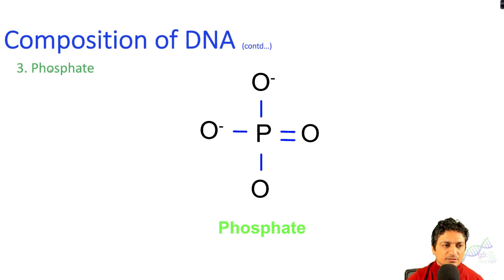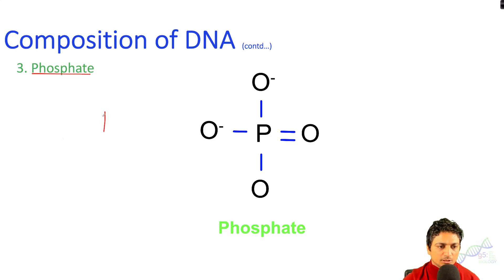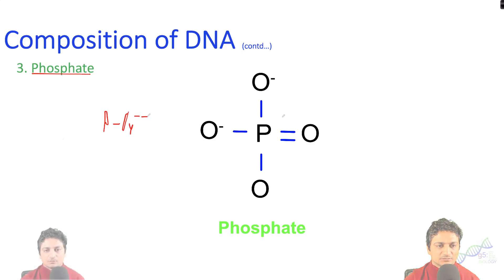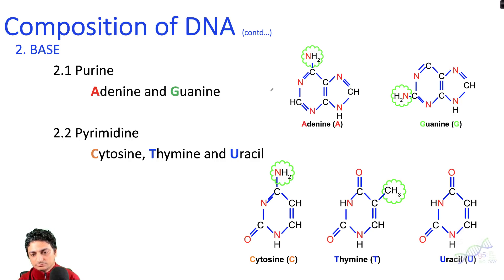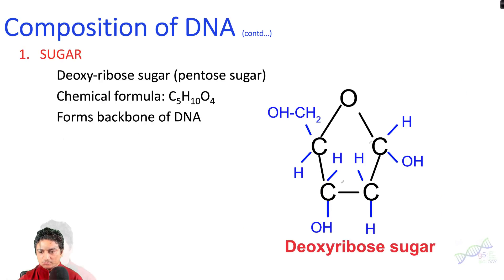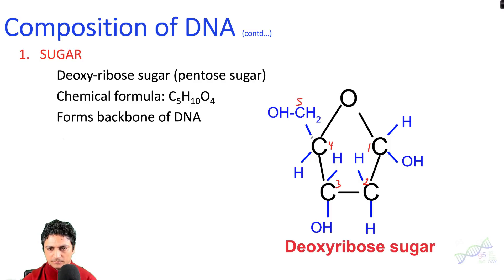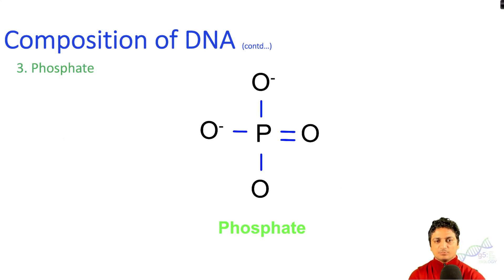The third component of DNA is the phosphate group. In the phosphate group, one phosphorus atom is bonded to four different oxygen atoms and it carries two negative charges. One phosphate group is bound to two different deoxyribose sugars — at the three-prime and the five-prime positions of the deoxyribose sugar.